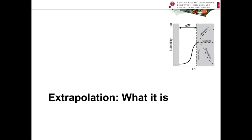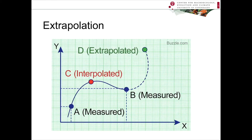So first, extrapolation — what is it? When you fit a model, you take a series of measurements, you build the model based on those measurements, and you come up with some equation or series of equations. In this case, we have two measurements, A and B. The model would be the smooth line. Any area that falls on that smooth line but within the training dataset, we call an interpolation — basically smoothing any responses you have between the two measurements.